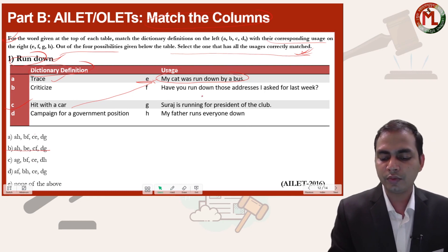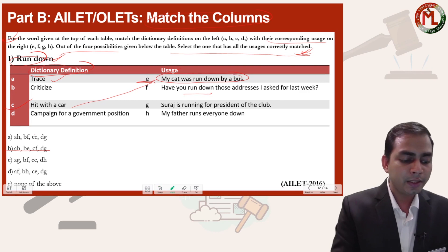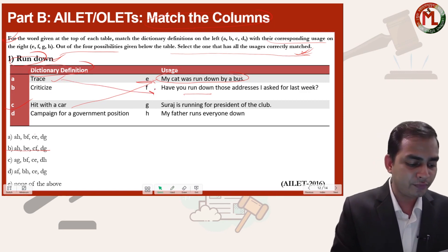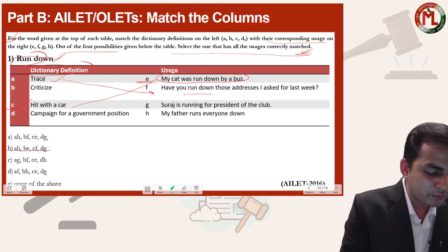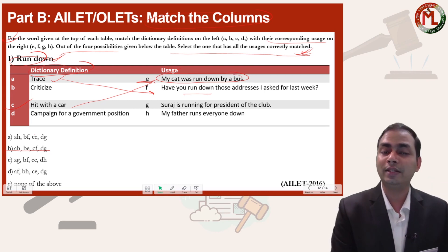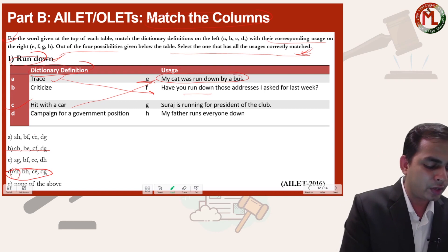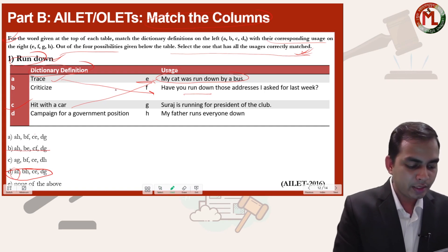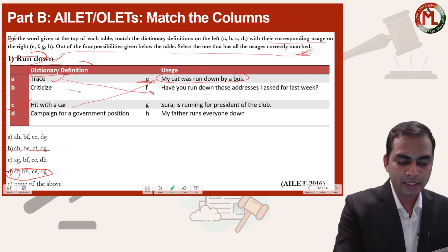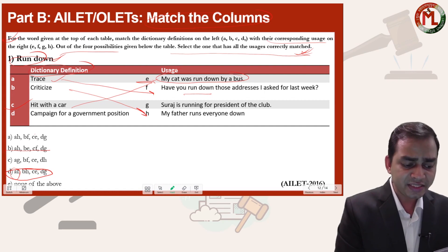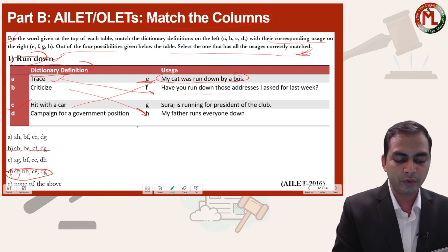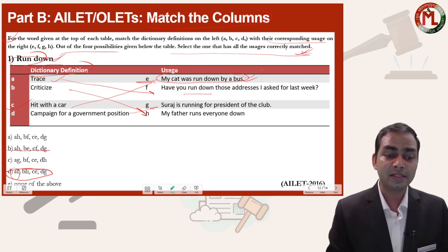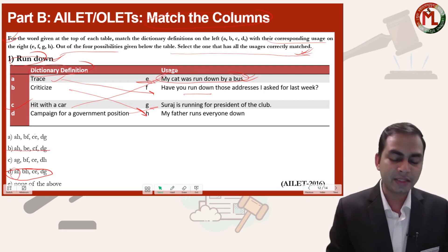Now read the second usage: 'Have you run down those addresses I asked for last week?' Here, 'run down' means 'trace', which is A-F. Find where A and F appear together — only in one option, so that narrows it down. Verifying further: 'My father runs down everyone' means criticize — B goes with H. 'My cat was run down by a bus' — hit with a car — C goes with E. 'Suraj is running for president in the club' — campaign for a government position — D goes with G. Read each usage first and then mark the correct option.